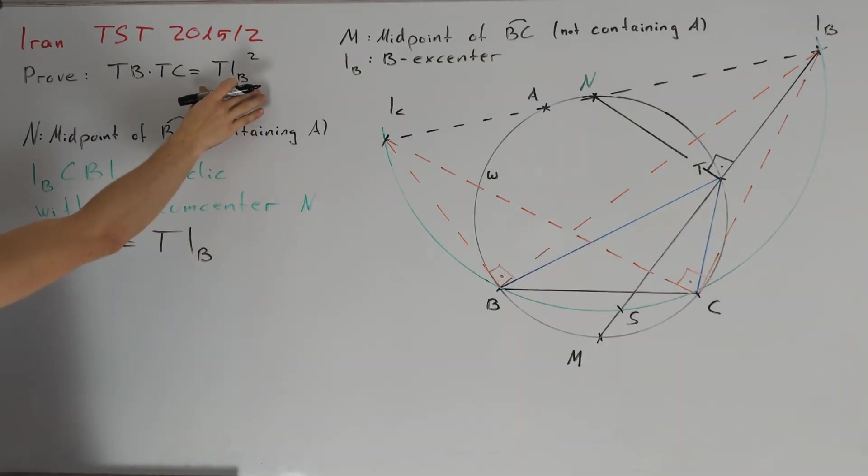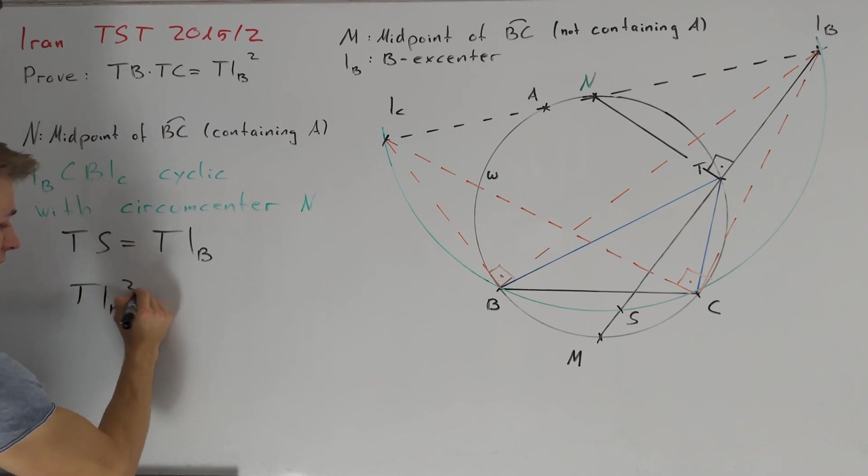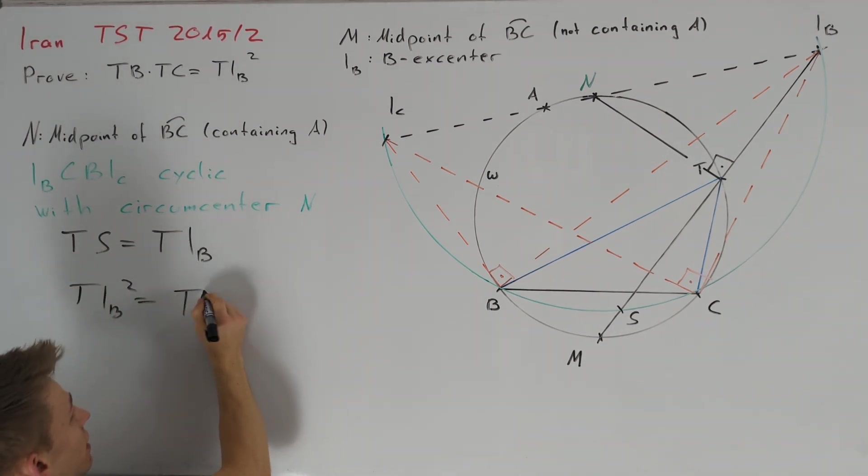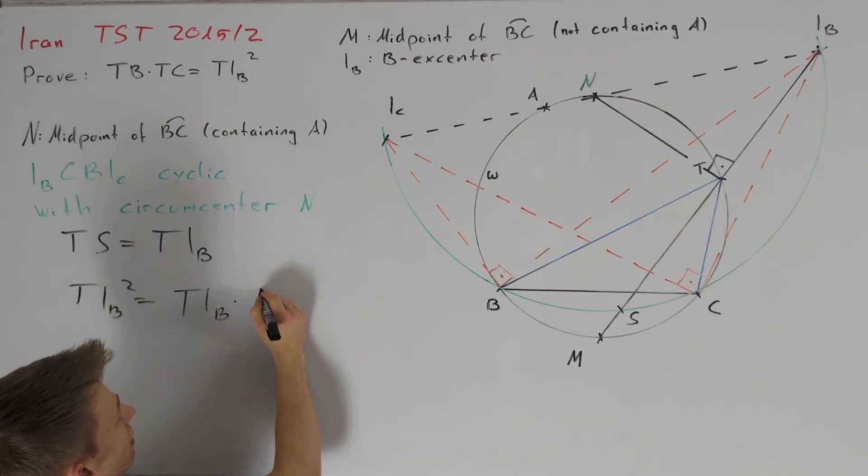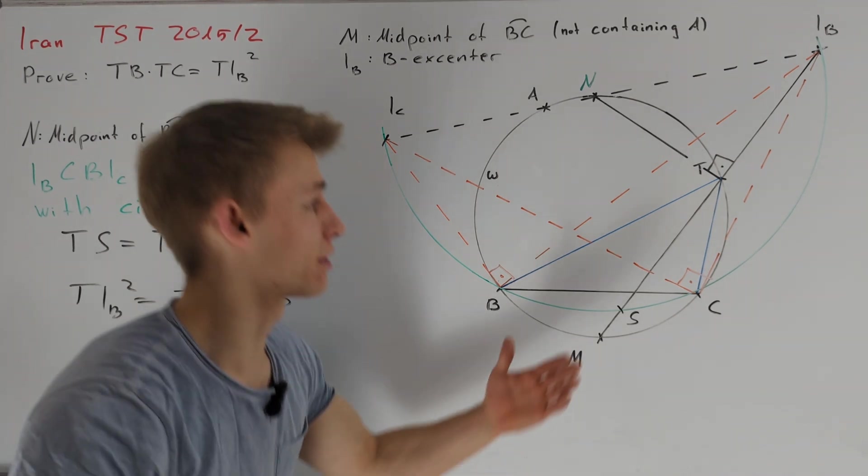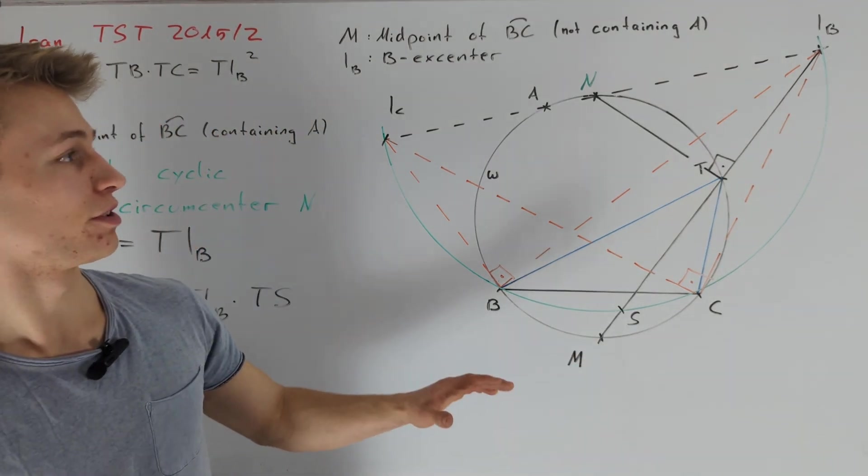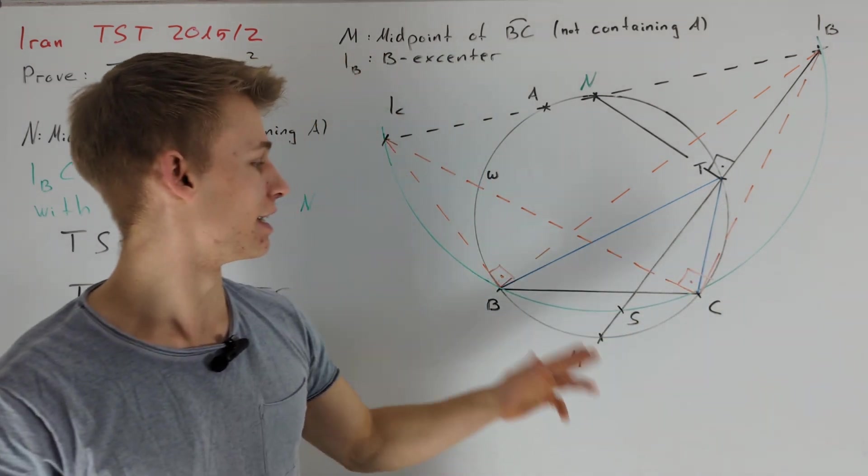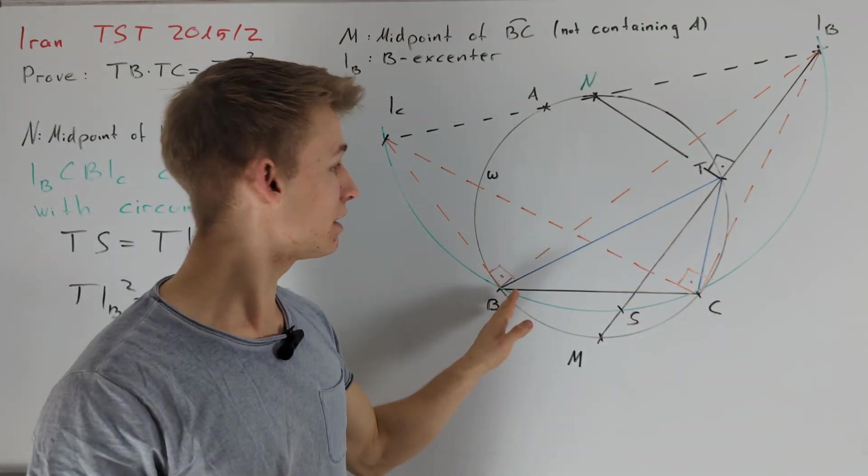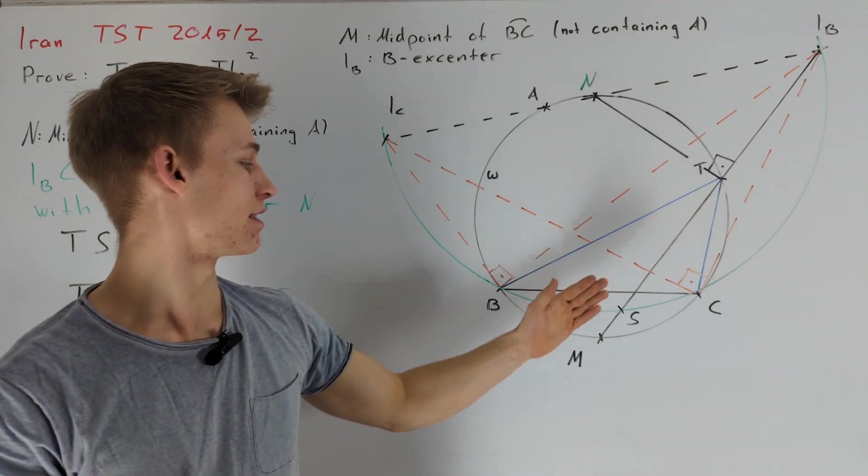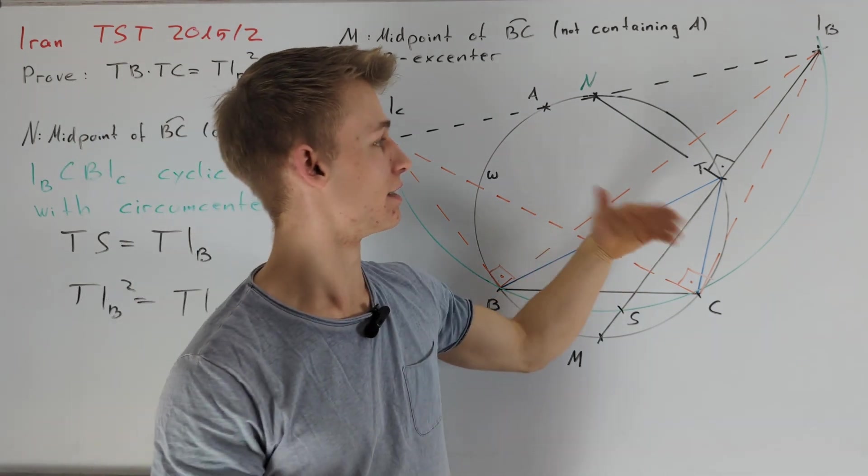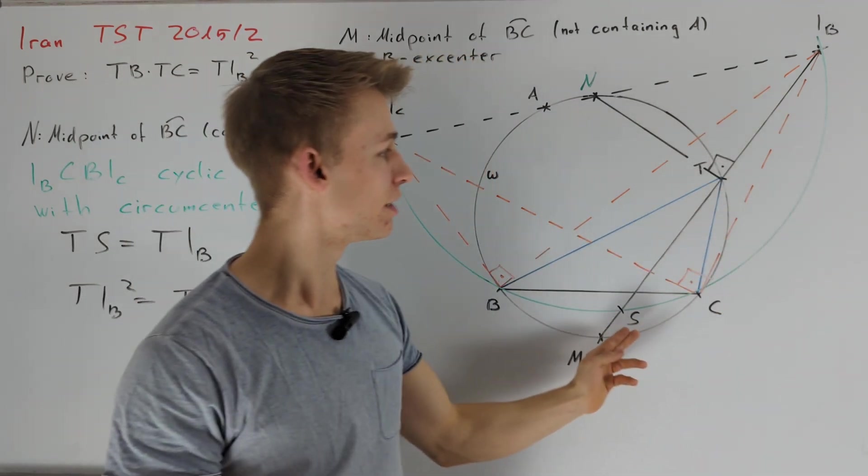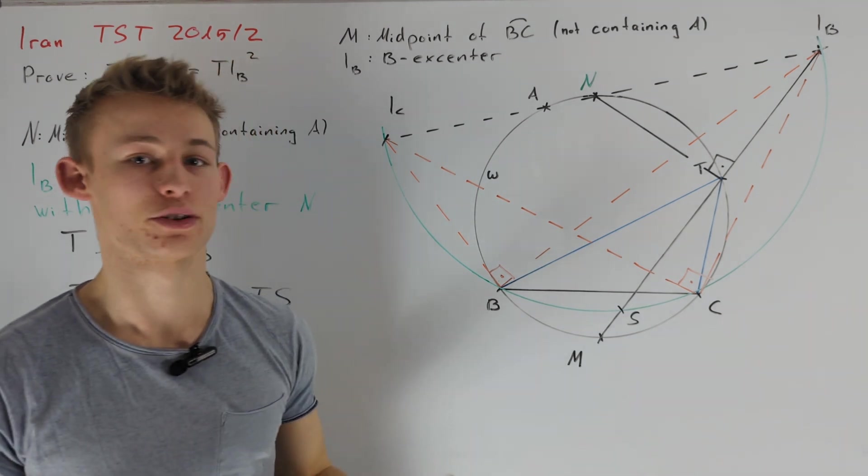This also allows us to write the right-hand side here of our equation TIB squared as the product of TIB and TS. Just taking a look back to the picture, we see that our goal is to prove that TIB times TS is equal to TB times TC. This motivates us to extend BT and intersect it with this green circle here and then use the intersecting chords theorem.